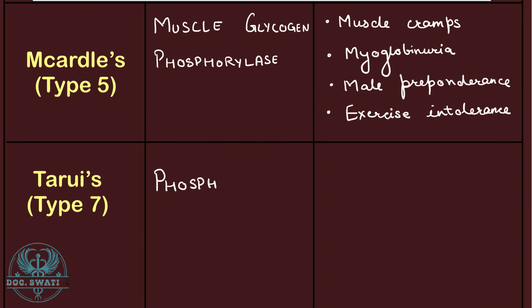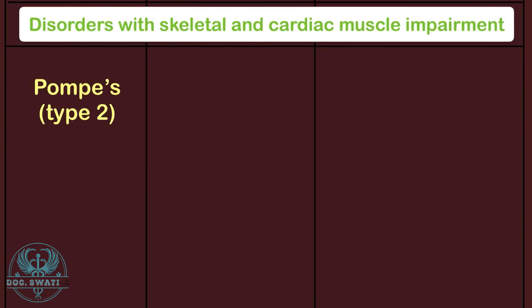Next is Tauri's disease, which is Type 7 glycogen storage disease. It is caused due to the deficiency of phosphofructokinase. Hemolysis is seen in patients with Tauri's disease. Moving ahead, let's discuss disorders with skeletal and cardiac muscle impairment.